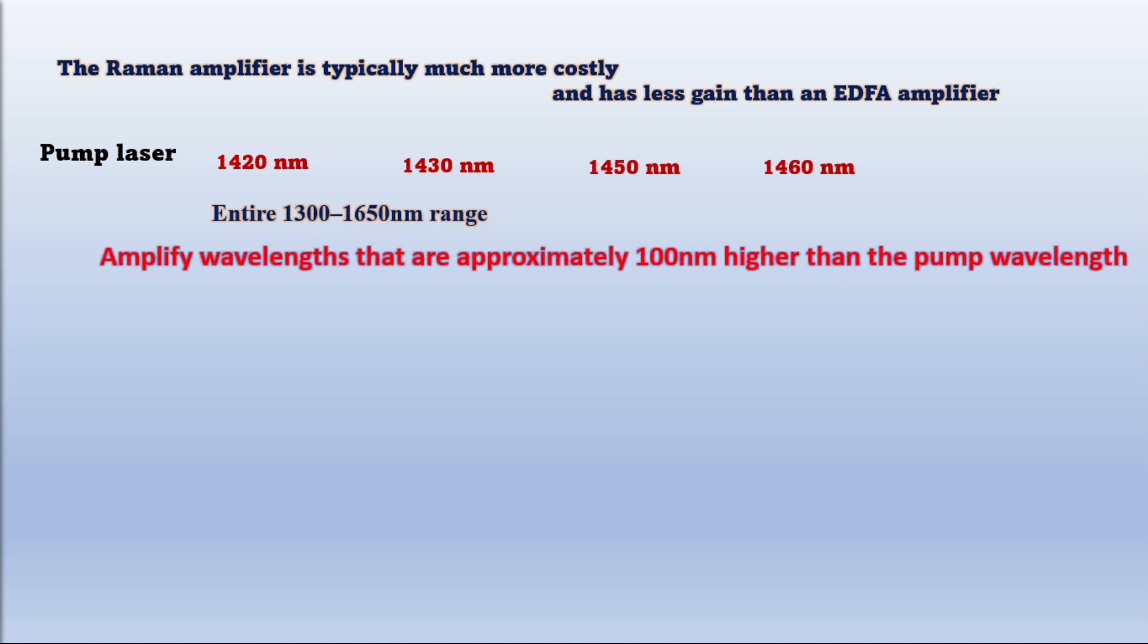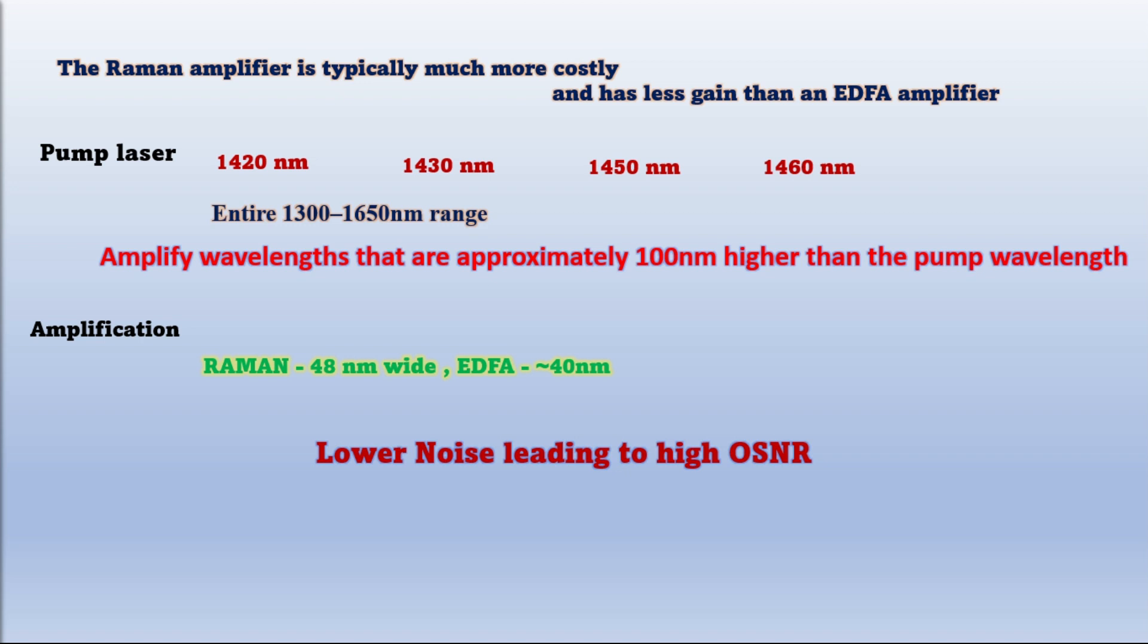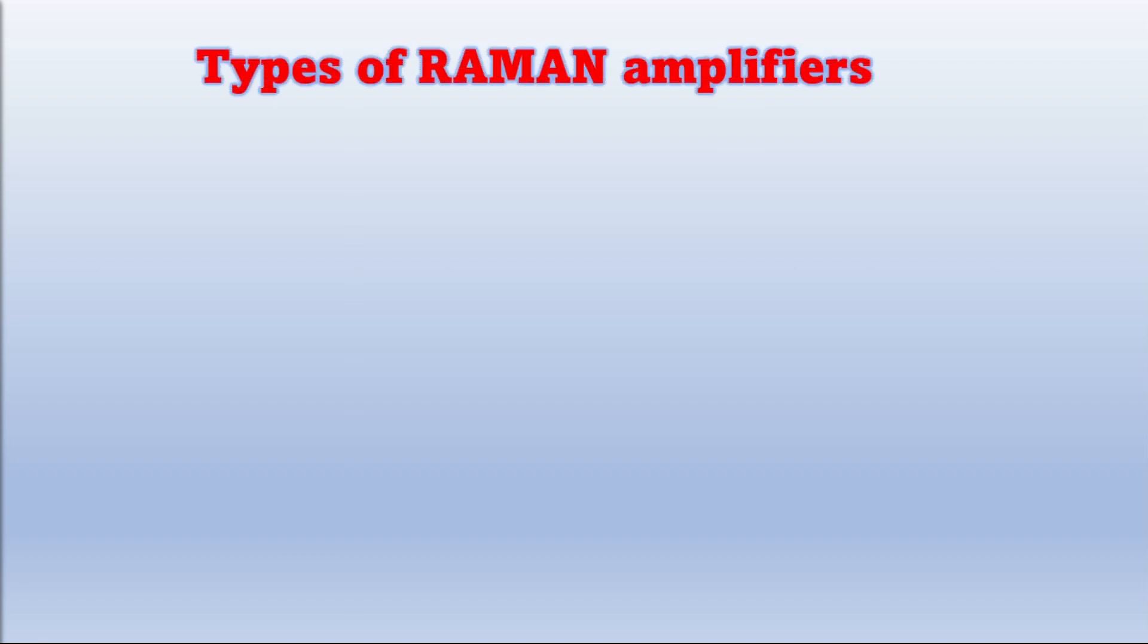Benefits of using different pump lasers as Raman amplifier: amplify wavelengths that are approximately 100 nanometers higher than the pump wavelength. Amplification window of Raman amplifier is 48 nanometers wide, which is higher than EDFA amplification window. Raman amplifier generates very little noise and hence does not degrade span OSNR as much as the EDFA. Using Raman amplifier in EDFA spans where additional gain is required but the OSNR limit has been reached. Adding a Raman amplifier may not significantly affect OSNR but can provide good signal gain.